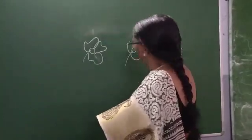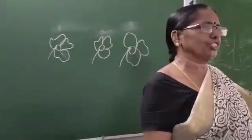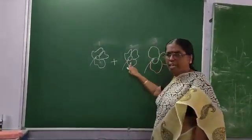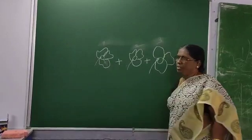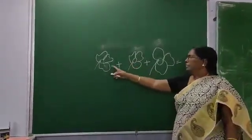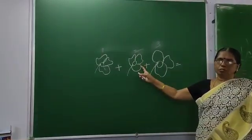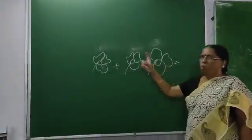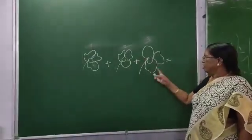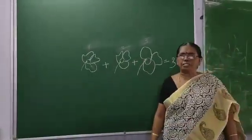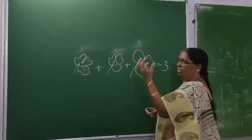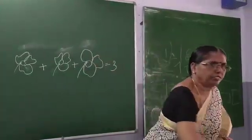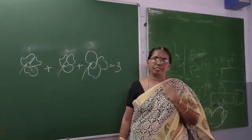Now we shall add up all this. Add up means: when your mother tells you to go into the garden and get some flowers for puja. So, one plus one plus one is equal — how many are there? One, two, what comes after two? Three. So, how many flowers did you bring for your mother for puja? Three flowers. One, two, three. So, you have got three flowers for puja.